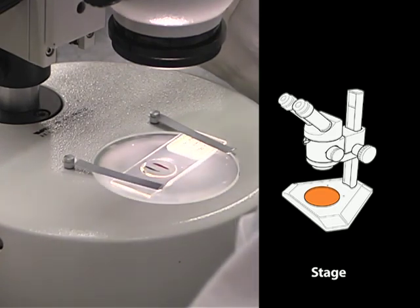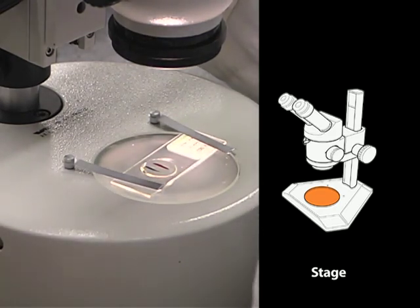For transmitted light, the stage plate is usually frosted glass to diffuse the light evenly across the stage.